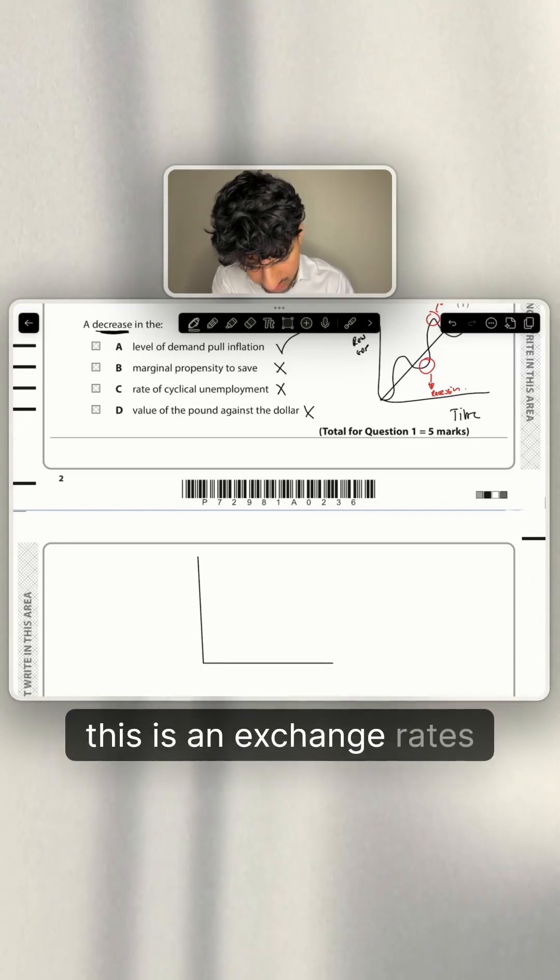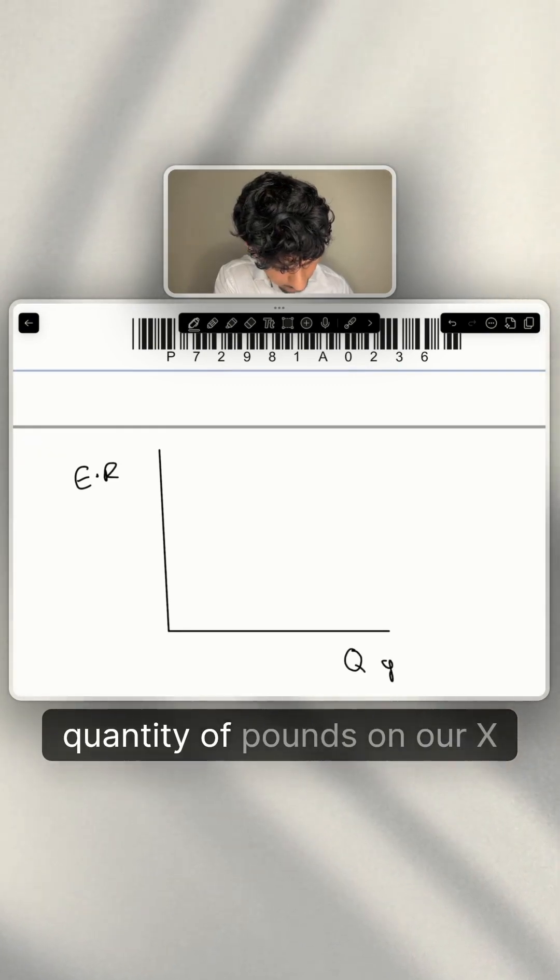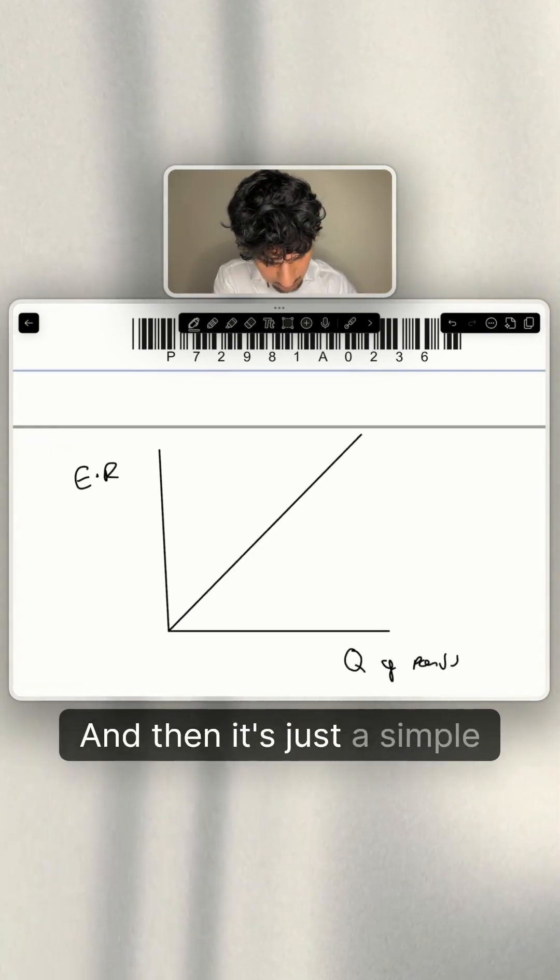And the easiest way to think about this is an exchange rate diagram. So we have exchange rate of the pound on our y-axis and quantity of pounds on our x-axis. And then it's just a simple supply and demand diagram.